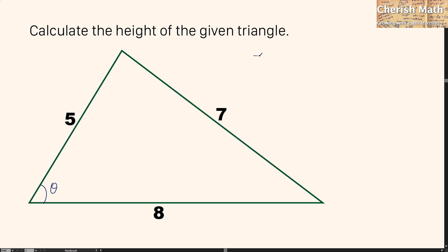Now, I'm going to start with the cosine rule here. 7 squared is equal to 5 squared plus 8 squared minus 2 times 5 times 8 cos theta.